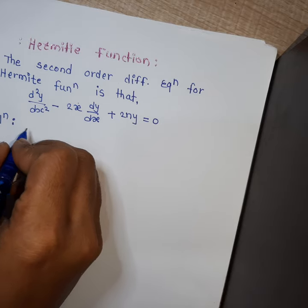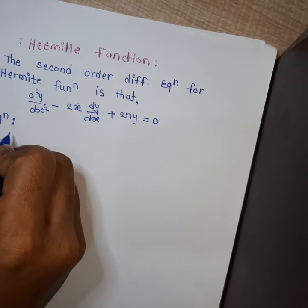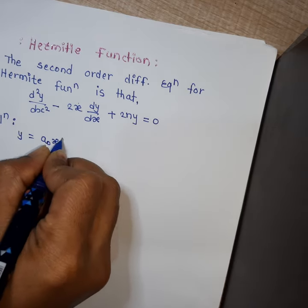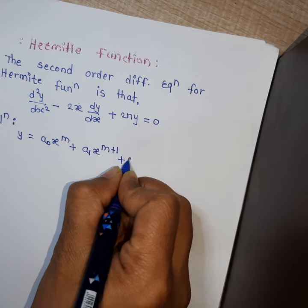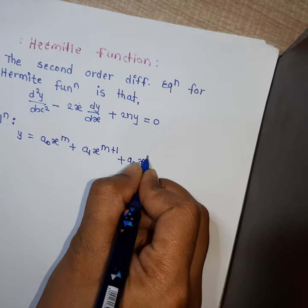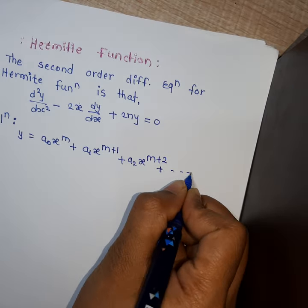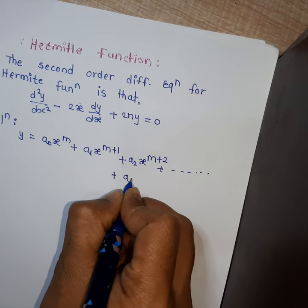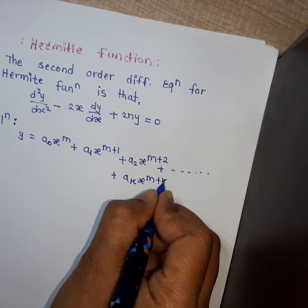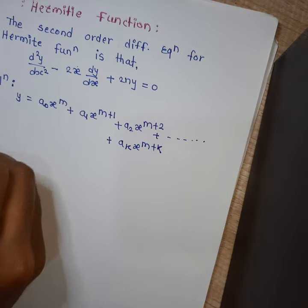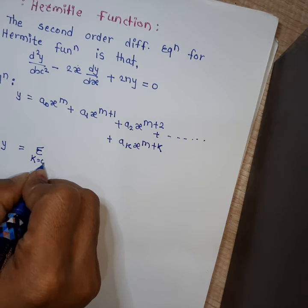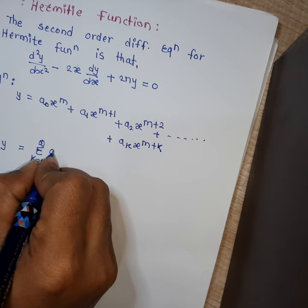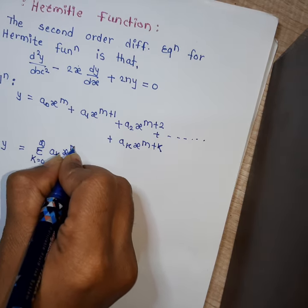Suppose the series solution is y equals a₀x^m plus a₁x^(m+1) plus a₂x^(m+2) and so on, plus aₖx^(m+k). Or equivalently, y equals the summation over k from 0 to infinity of aₖ x^(m+k). Call this equation 2.